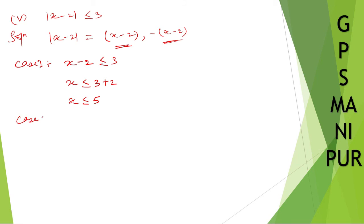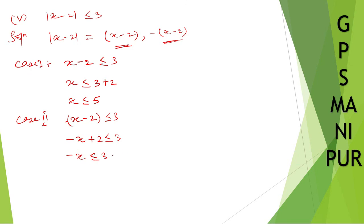Case 2: minus of x minus 2 is less than or equal to 3. Expanding: minus x plus 2 is less than or equal to 3, so minus x is less than or equal to 3 minus 2, which is 1. When minus goes to the other side and the direction changes, x is greater than or equal to minus 1.